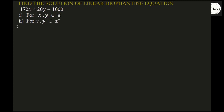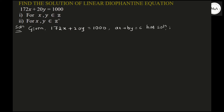Without wasting time, we move on. Given is 172x plus 20y equals 1000. We need to compare this with the standard equation ax plus by equals c. This equation has a solution if and only if d divides c, where d is the GCD of a and b. One must keep this in mind.